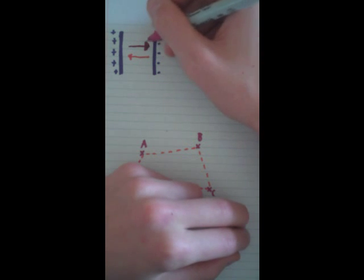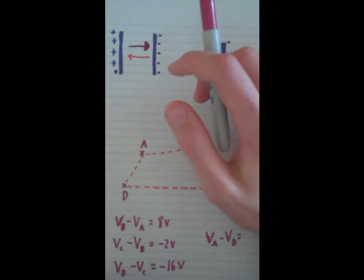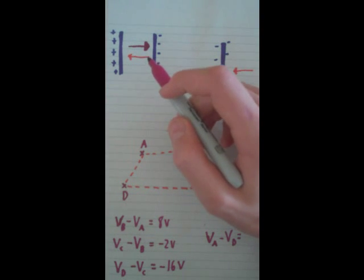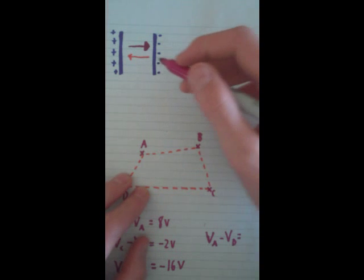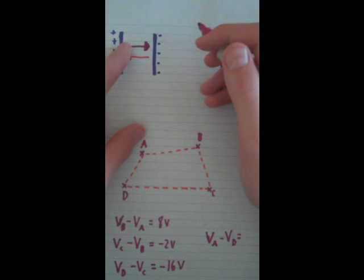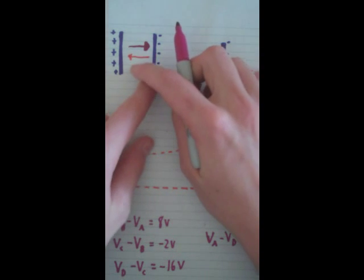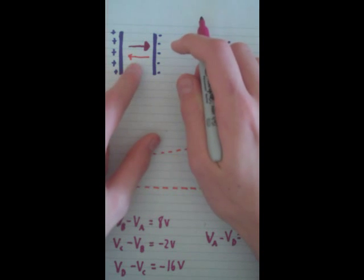And since the electric potential—or not negative I should say—takes into account the electric field and is negative towards it, then whenever it's acting against the electric field, it's going to be positive.